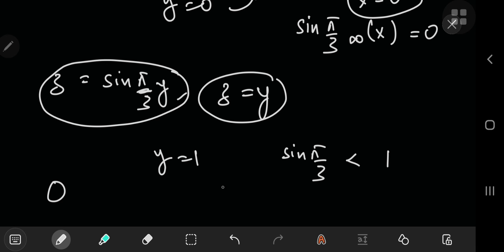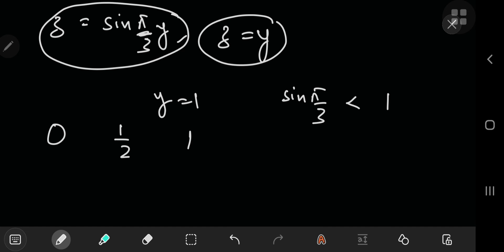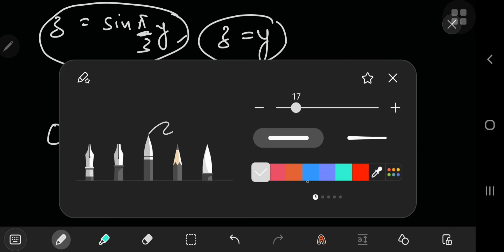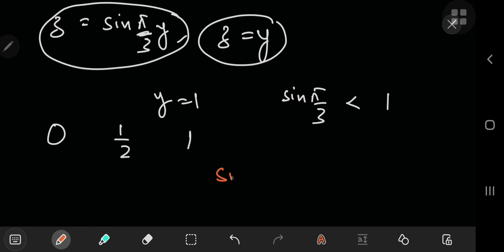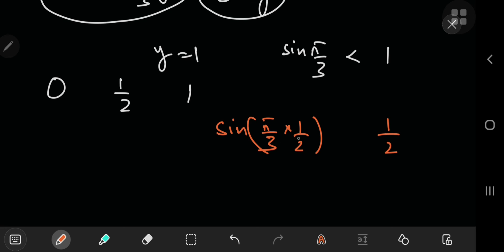And this actually surprised me, that if you take sin(π/3 times 1/2) and you write 1/2 on the other side, then this is sin(π/6), which is in fact equal to 1/2.